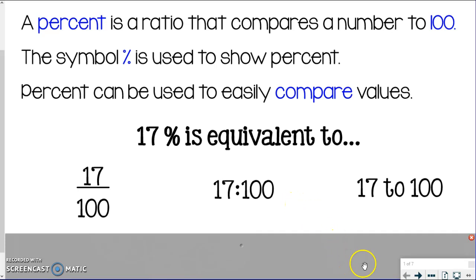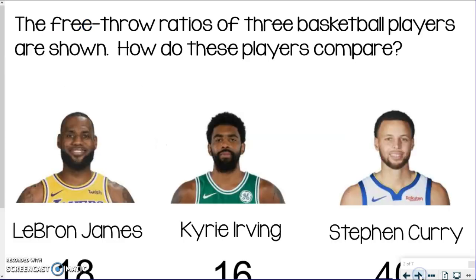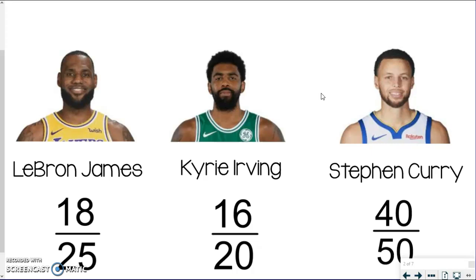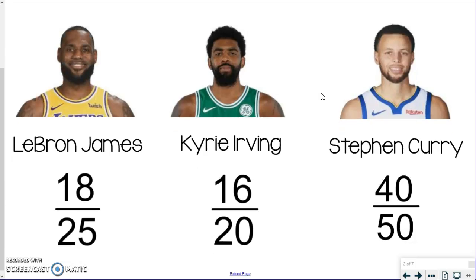And if you need to go back and take a closer look, go right ahead, but I'm going to move on to the next thing, which is our example with some basketball players who I know look familiar to you. So we're going to compare these three basketball players' free throw ratios, and let's take a look at what they have so far. So go ahead and write these ratios next to each player. We got LeBron James at 18 out of 25, Kyrie Irving at 16 out of 20, and Stephen Curry 40 out of 50.